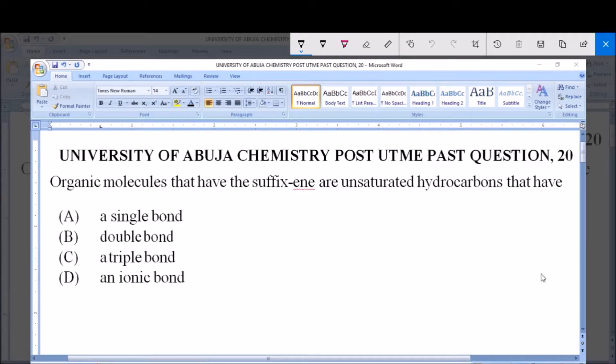Hello and welcome. Today we will be dealing with University of Abuja Chemistry Post-UTME past question, question 20. Organic molecules that have the suffix -ene are unsaturated hydrocarbons that have: A) single bonds, B) double bonds